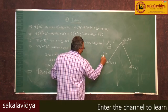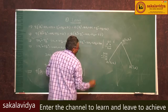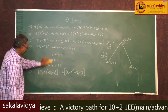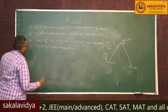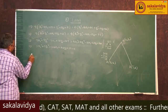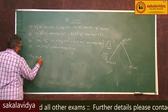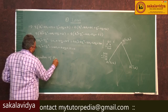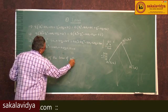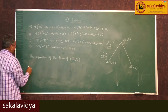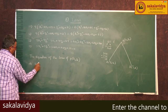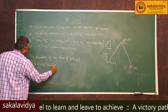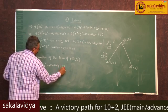After simplification, we get minus 340 plus 29 equals 0. Therefore, the equation of the locus of P(x1, y1) is 5x² + 5y² - 34x + 120y + 29 = 0.